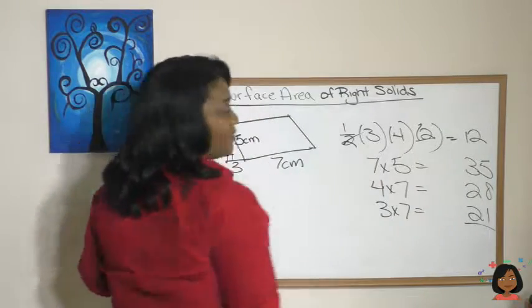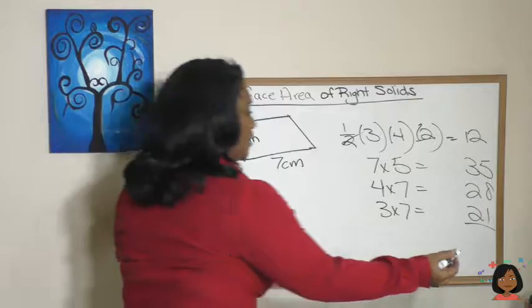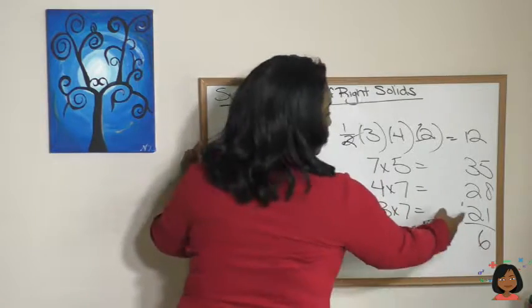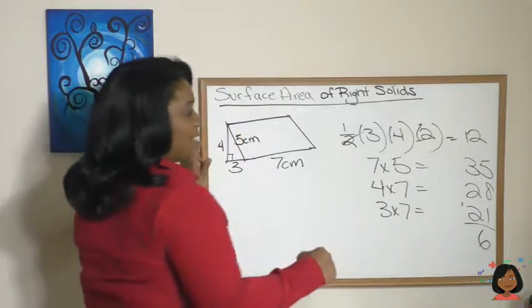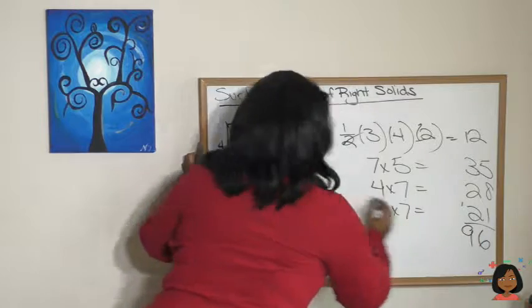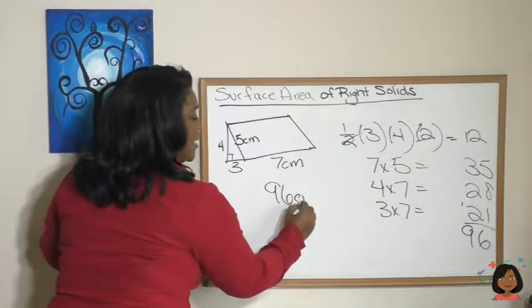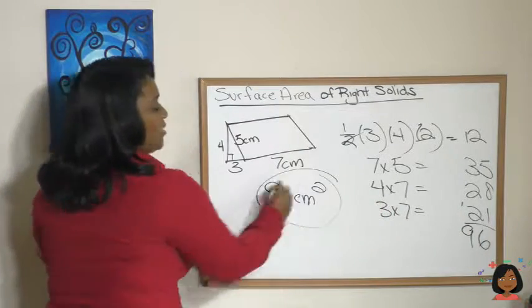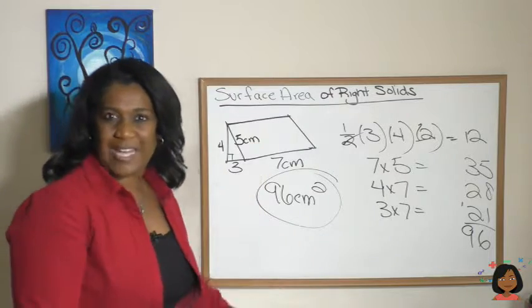We've got five, six, seven, seven, and eight is fifteen, and one is sixteen. Two, four, five, eight, and nine. So ninety-six centimeters squared is your surface area for the triangular prism.